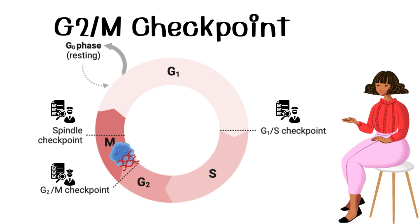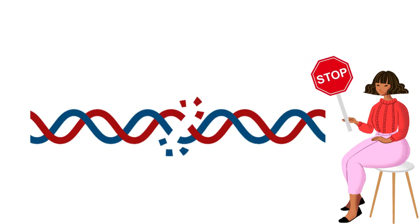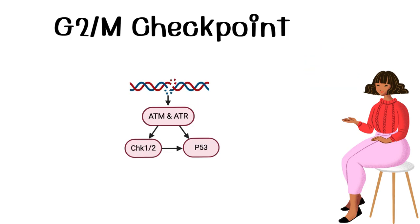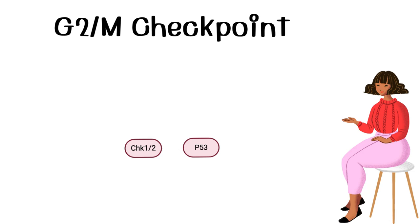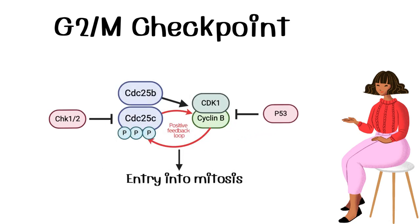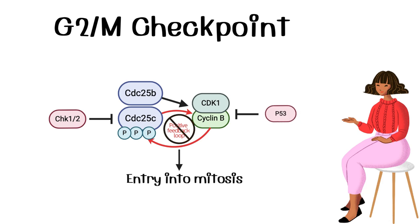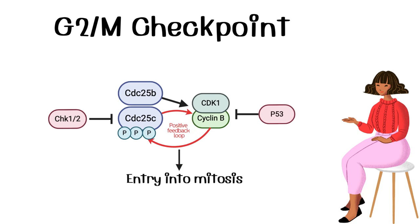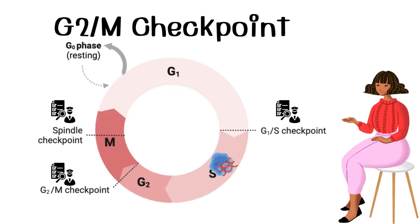In the case that DNA has been damaged during replication, as we have seen with the G1/S phase checkpoint, CHK1 and CHK2 and P53 are activated. P53 increases proteins that inhibit the activity of the MPF. Without MPF activity, the cycle's progression into mitosis will be prevented. CHK1 and CHK2 also inactivate CDC25C through phosphorylation, thus preventing entry into mitosis.